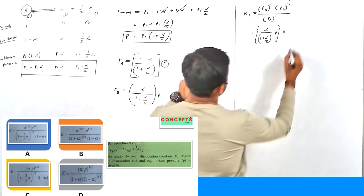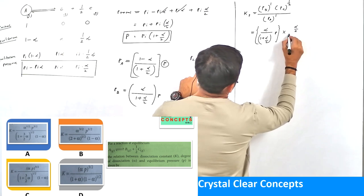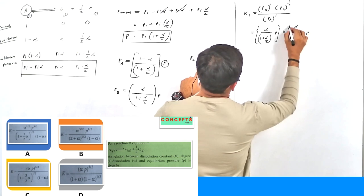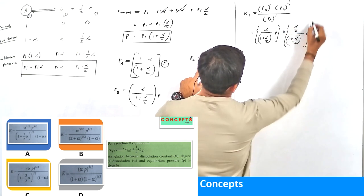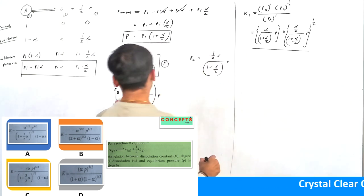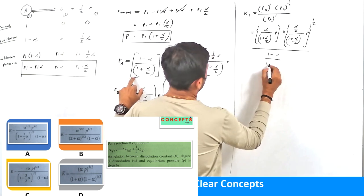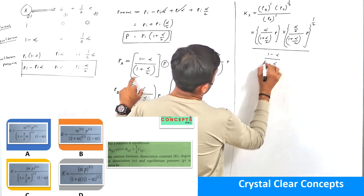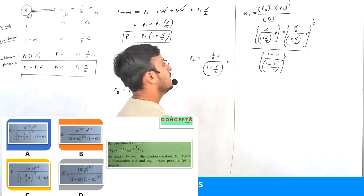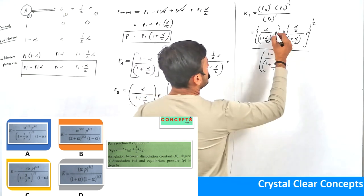PC value is (α/2) / (1 + α/2) × P, raised to the power half. And PA value is (1 - α) / (1 + α/2) × P. In the equation, we can see that the P values and the (1 + α/2) terms appear in numerator and denominator and can be cancelled out.